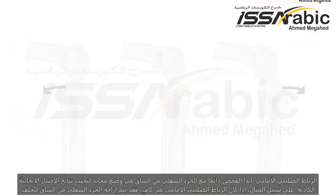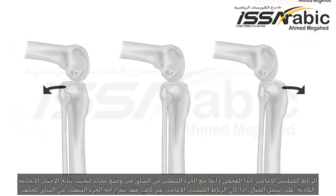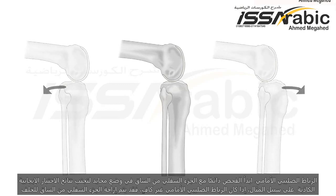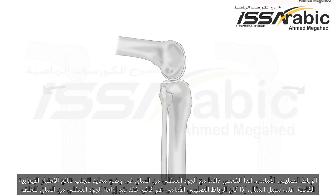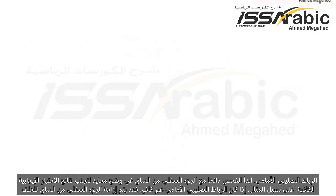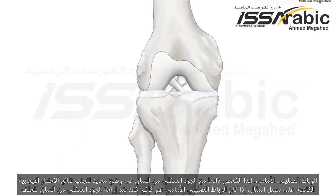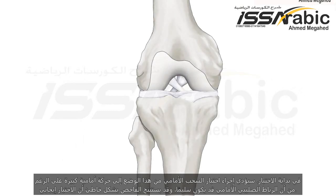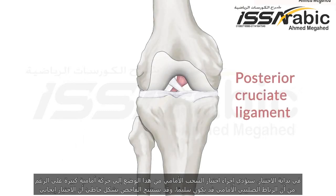Always start the examination with the lower leg in a neutral position to avoid false positive test results. For example, if the PCL is insufficient, the lower leg might be displaced posteriorly at the beginning of the test.